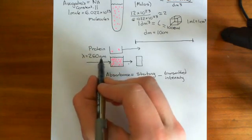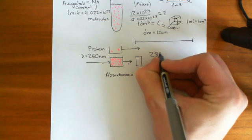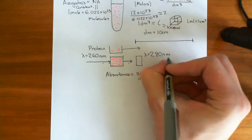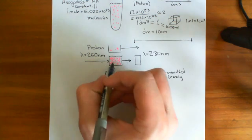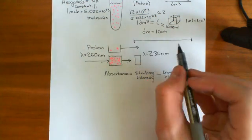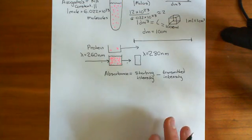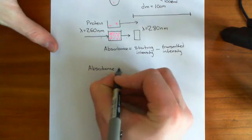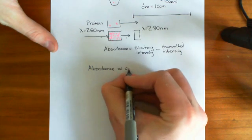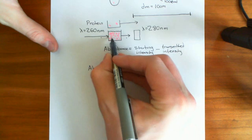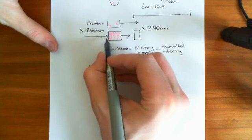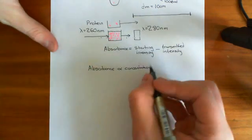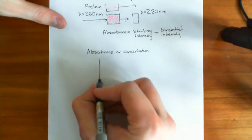The exact same process is done for DNA, except you use a wavelength of 280 nanometers, because DNA interacts more favourably with that wavelength. So 260 nanometers is for protein, 280 nanometers is for DNA, but the principle is the same. What you find is that absorbance is directly proportional to concentration — if you double the concentration, the amount of light absorbed is doubled as well.